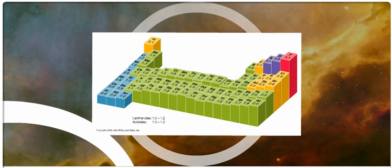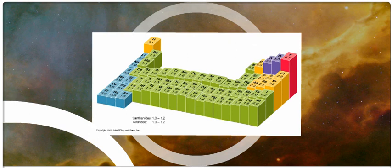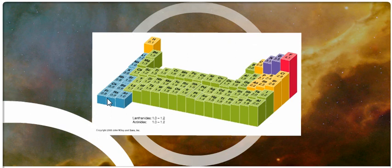Here we have the electronegativities of all the elements on the periodic table, including the actinide and lanthanide series. The smaller the atom, the closer the electrons can be to the nucleus, and the more attracted they will be to it. So our smallest atoms, like fluorine, have the highest electronegativity, while our largest atoms have the lowest electronegativity because there's a great deal of shielding around their nucleus and not a lot of attraction for the electrons involved in a bond.